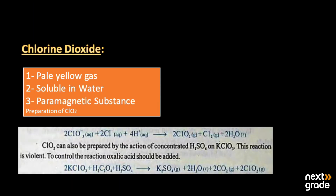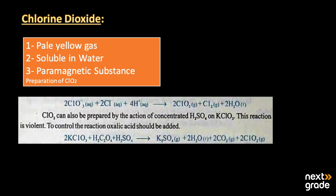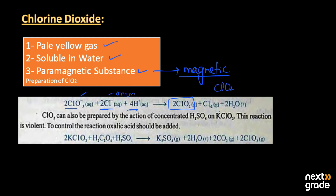Now for properties of chlorine dioxide: it is a pale yellow gas, it is soluble in water, and it is a paramagnetic substance — meaning it is attracted toward a magnet. Regarding its preparation, chlorine trioxide anion reacting with chlorine anion in the presence of hydrogen ions produces chlorine dioxide (ClO2), chlorine gas, and water.